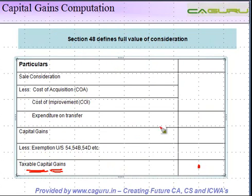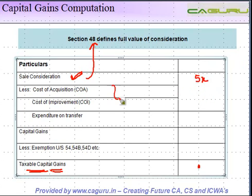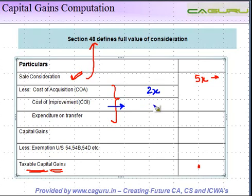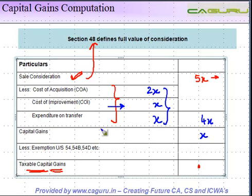To compute taxable capital gain, first look at the sale consideration — Section 48 is important as it tells you what is included in the full value of consideration. Say consideration is 5X. The cost of acquisition is 2X. The cost of improvement — for example, leveling uneven land before sale — is X. Expenditure on transfer is another X. Total cost in this blue section is 4X. Sale consideration 5X minus cost 4X gives a capital gain of X.